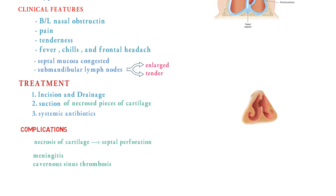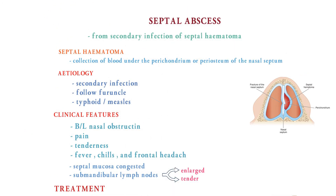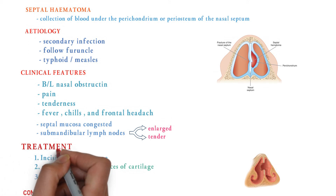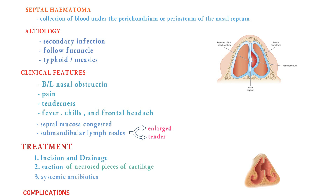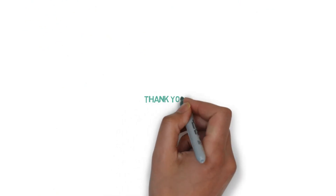To summarize: we discussed what septal abscess is, its etiology — secondary infection, foreign body, typhoid, and measles. Clinical features include bilateral nasal obstruction and enlarged or tender submandibular lymph nodes. Treatment involves incision, suction of necrosed pieces, and systemic antibiotics. The most serious complications are meningitis and cavernous sinus thrombosis.